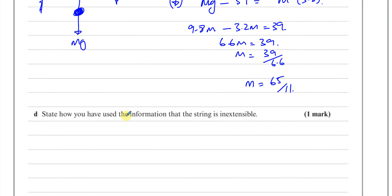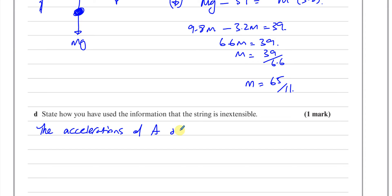Part D asks how we have used the information that the string is inextensible. We can say: the accelerations of A and B have the same magnitude. That's how we used the inextensible string condition in our calculations. That's part D done.